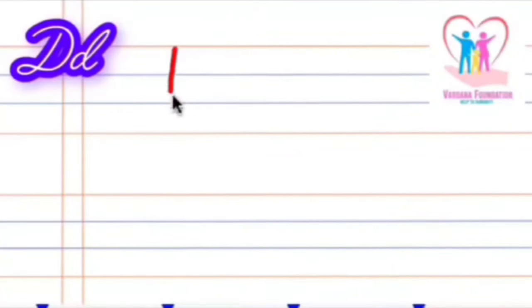So start from the pink line at the top, come down, make a loop and then make a big turn, come to the pink line on the top and smile on the first blue line. That is uppercase cursive letter D.